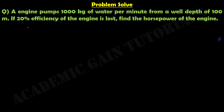In this question, the engine pumps 1000 kg of water per minute from a well depth of 100 meters. If 20% efficiency of the engine is lost, find the horsepower of the engine.